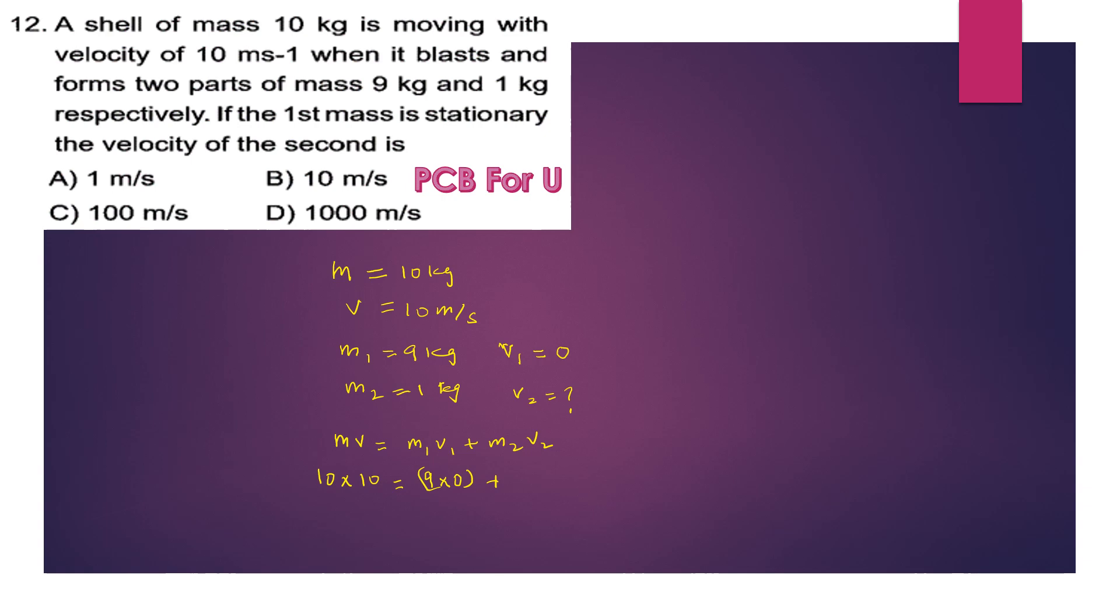If the first mass is stationary, applying conservation of momentum: m·v = m₁·v₁ + m₂·v₂. So 10 × 10 = 9 × 0 + 1 × v₂. Therefore v₂ equals 100, so 100 meters per second.